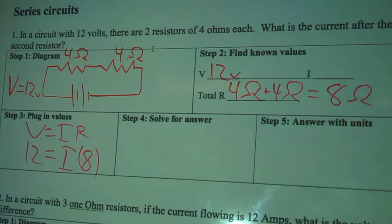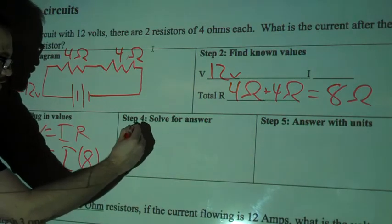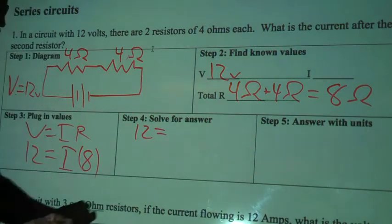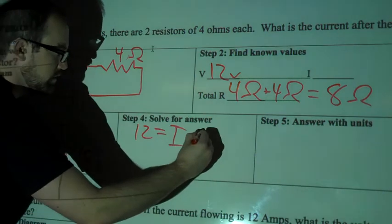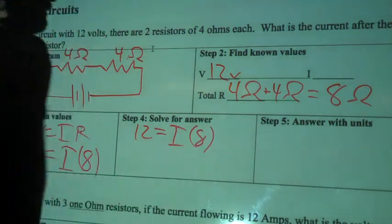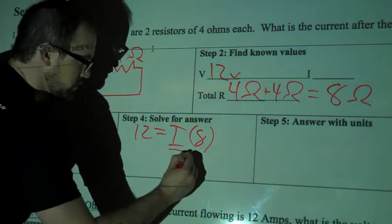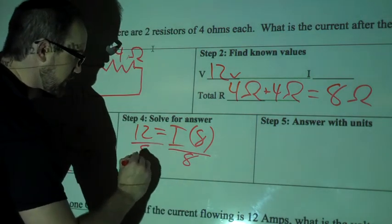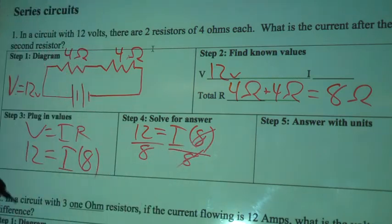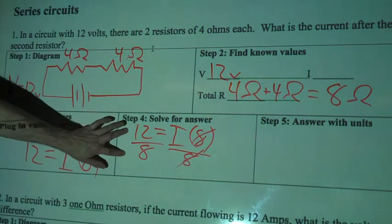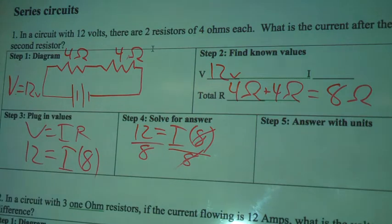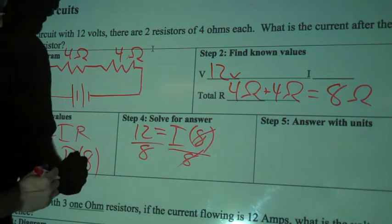Solve for answer. Very similar to ones we've done before. 12 equals I times 8. If I want to get I by itself, I have to divide both sides by 8. These 8's will cancel out. Now I've got 12 over 8. We can simplify this pretty easily before we even go any further.